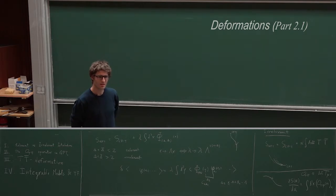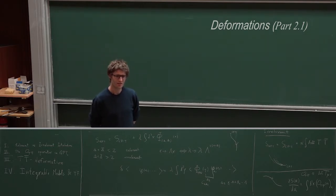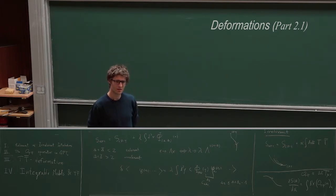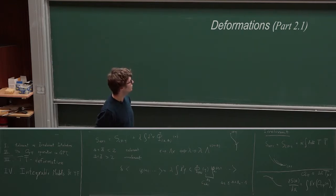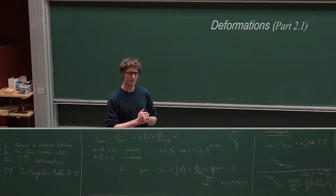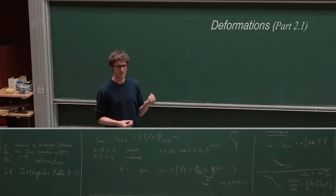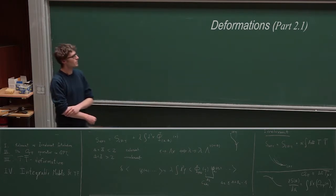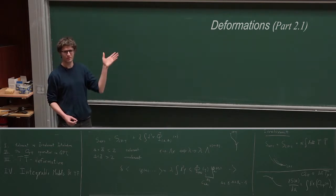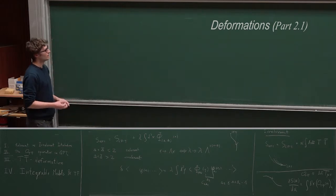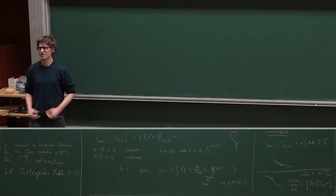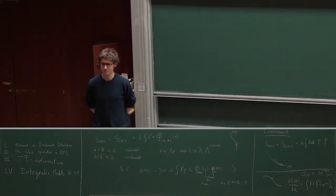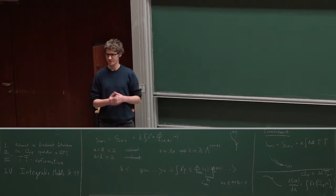A question: when we perturb the deformed theory with a relevant deformation, why would we expect it to flow to another CFT in the IR? CFTs are fixed points of the renormalization group flow, so they attract trajectories. But of course, in principle you have no idea what the IR CFT is. Another question: how important is it to be two-dimensional? It is very important — otherwise you cannot define the TT-bar operator.